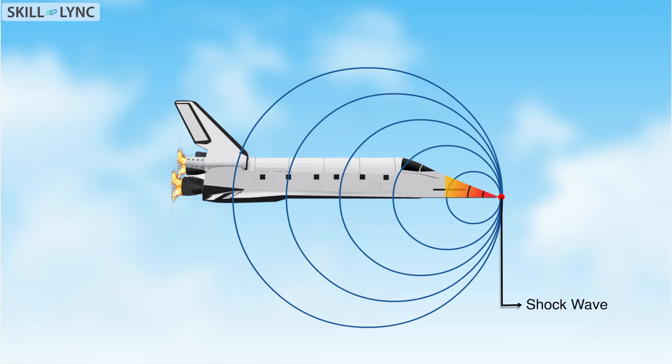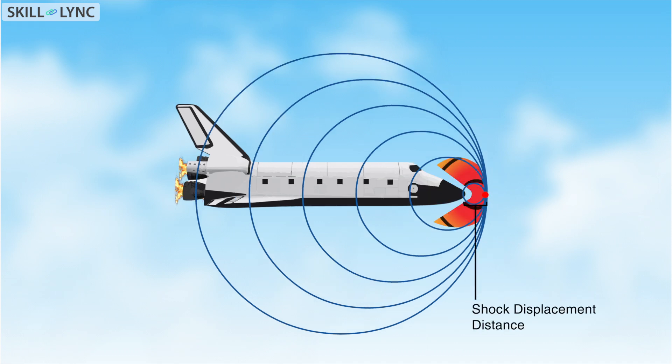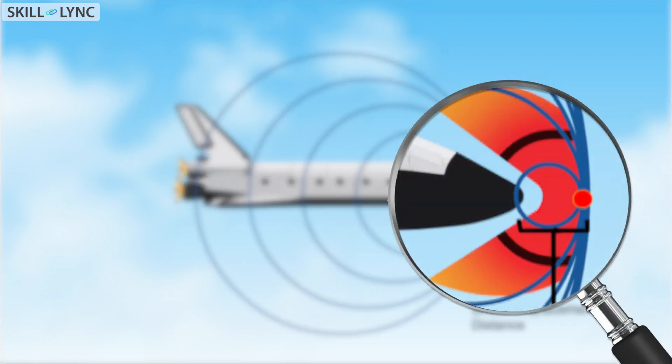Now it's very interesting to note that in case of a shuttle with a pointed tip, the bow or the shock wave sits very close to the nose. Whereas in case of a blunt nose, the bow shock sits at a distance away from the nose.